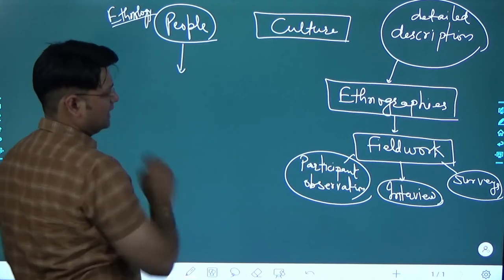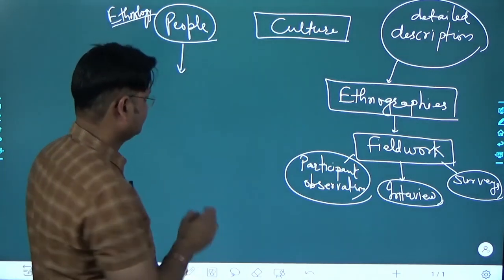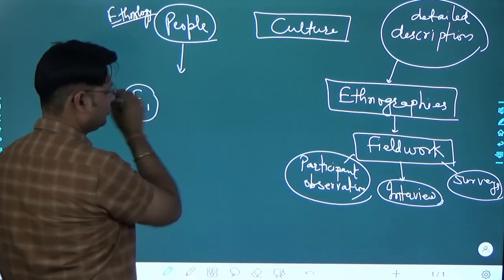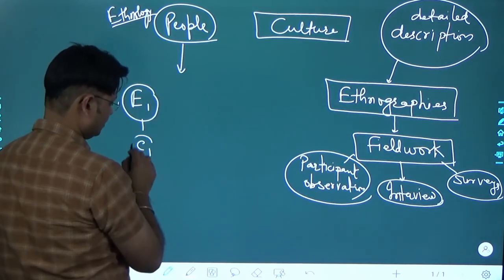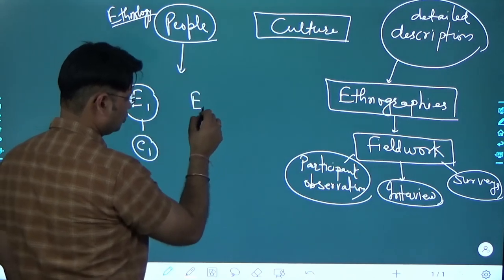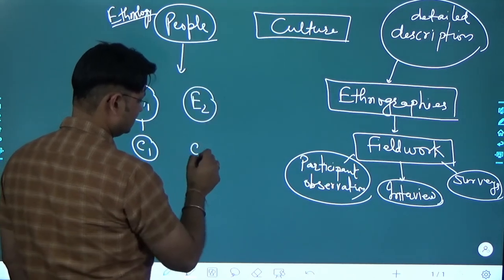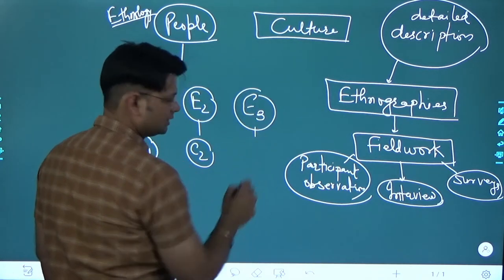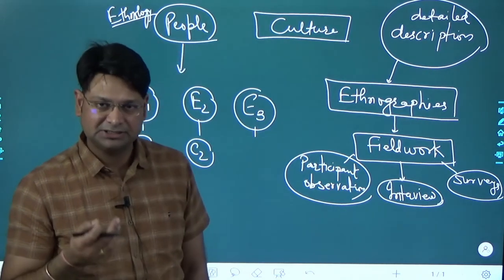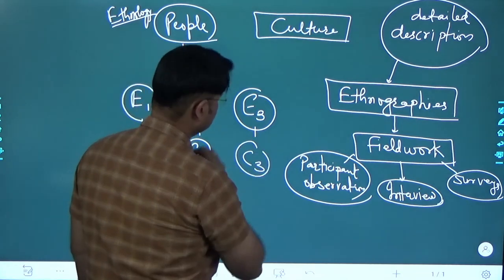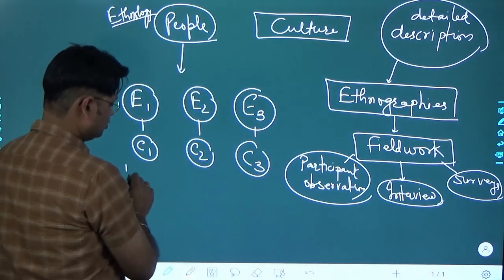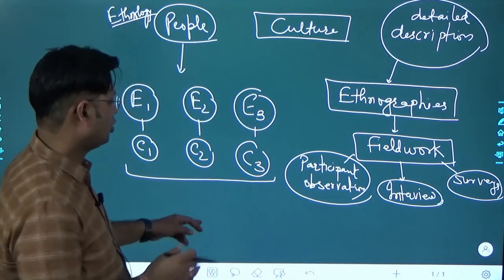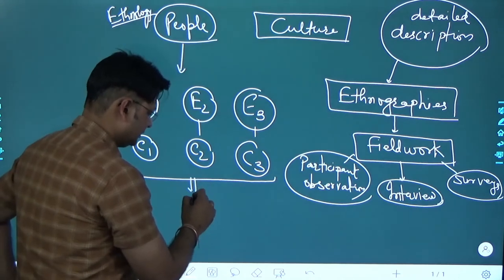Ethnology - ethnologists basically compare various ethnographies. Say there is ethnography 1 of a particular culture 1, there is ethnography 2 of a particular culture C2, there is ethnography 3 of a particular culture C3. So what ethnologists do - ethnologists will compare these three ethnographies in order to give a theory, a hypothesis.